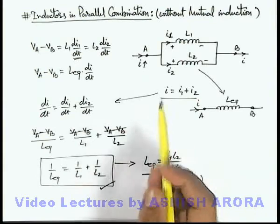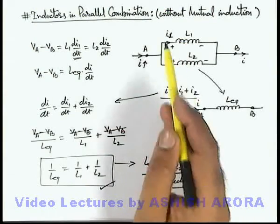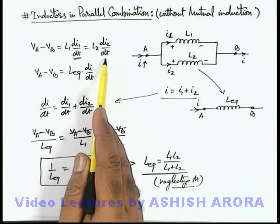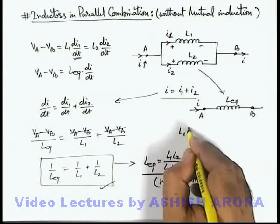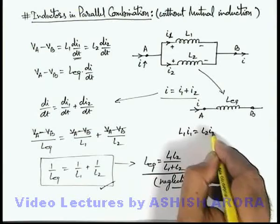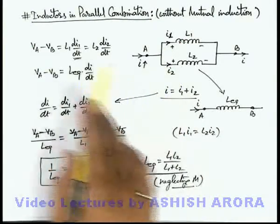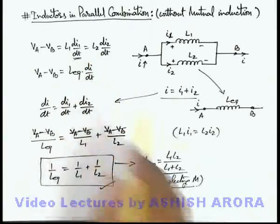Another important thing we can see here is, as L1 di1/dt is equal to L2 di2/dt, always we can write that L1 i1 is equal to L2 i2. The flux in the two will always remain same, because if we integrate the two expressions we are getting it.